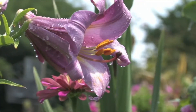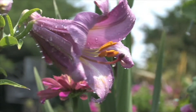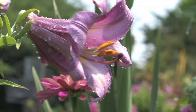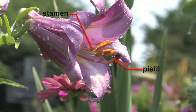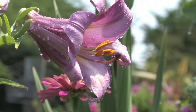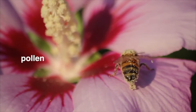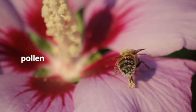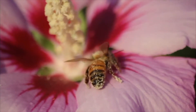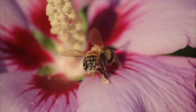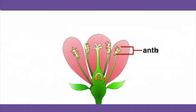Flowers are the sexual organs of plants. All flowers include the stamen or male organ, and the pistil or female organ, which contains one or more carpels. The stamen produces pollen. Pollen is a fine powder comprised of pollen grains. Pollen is released from the anther, which is part of the stamen. Pollen contains male gametes.